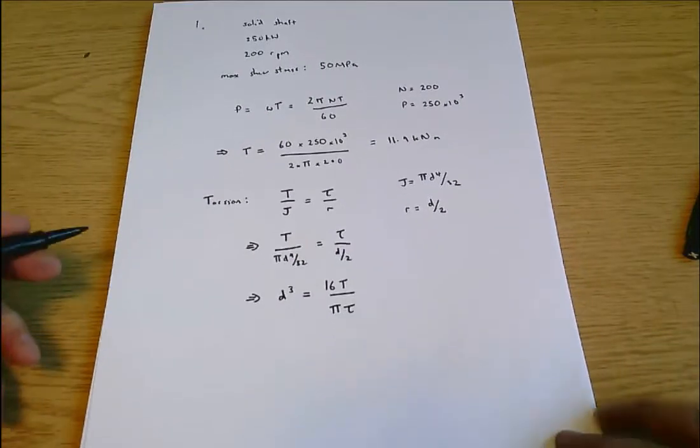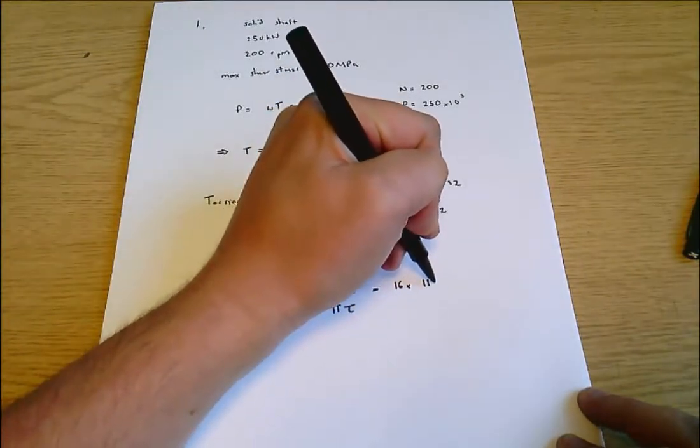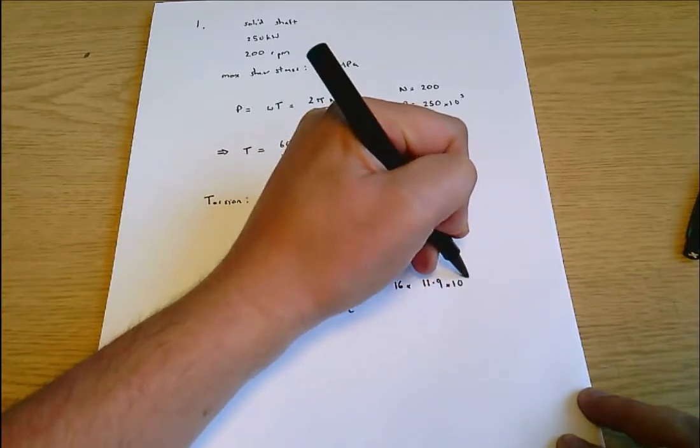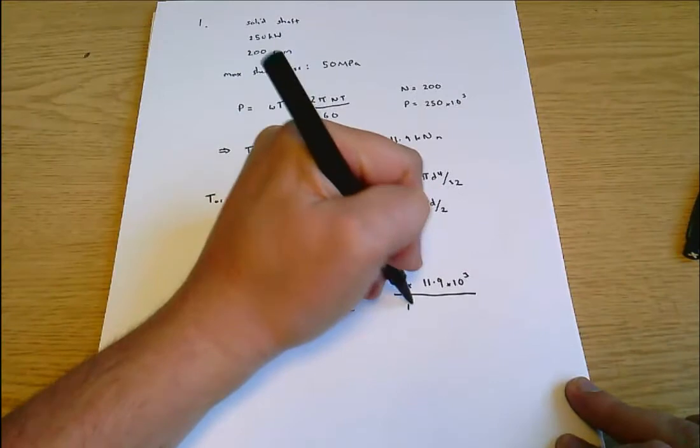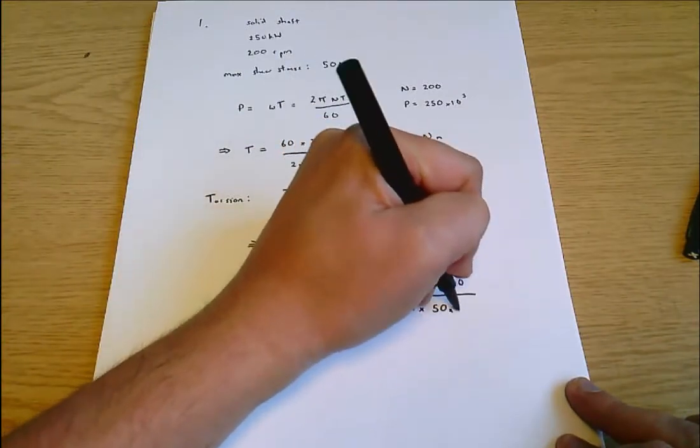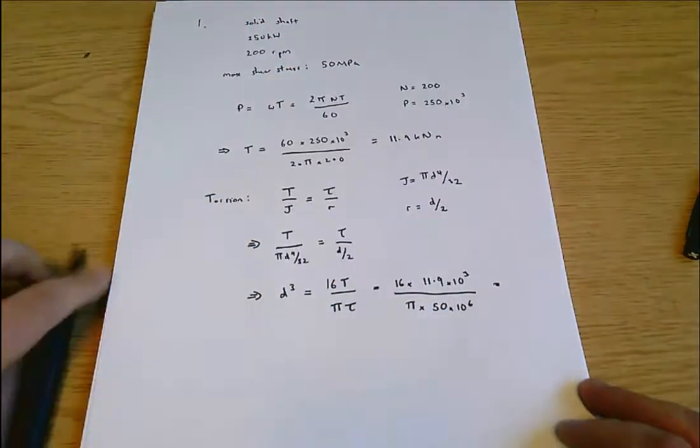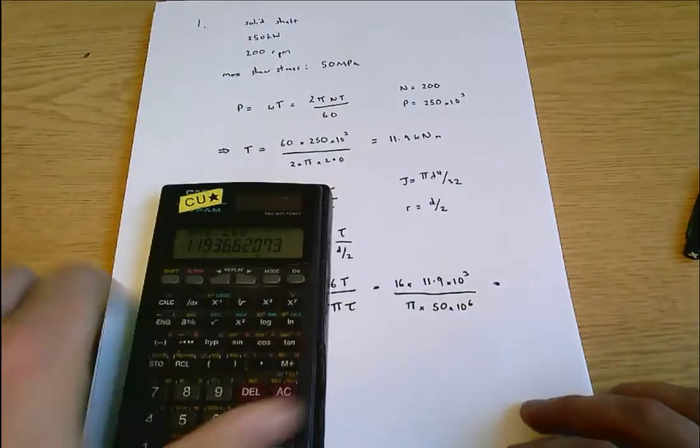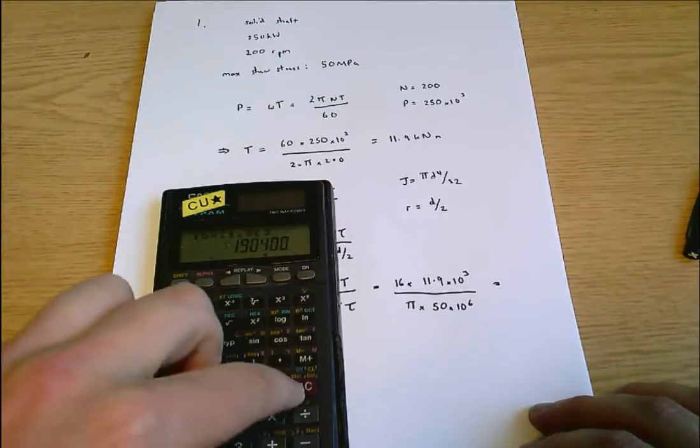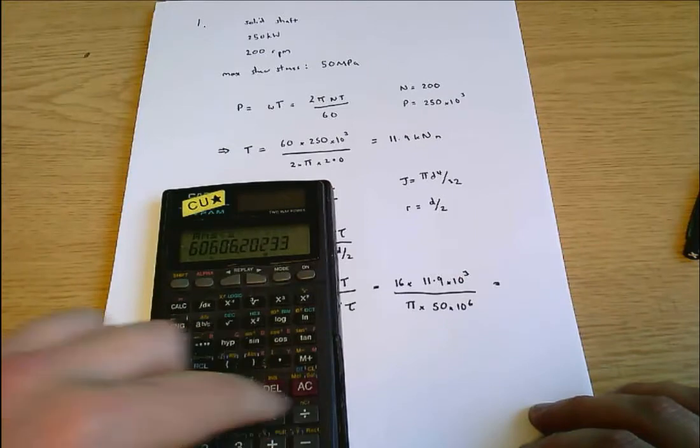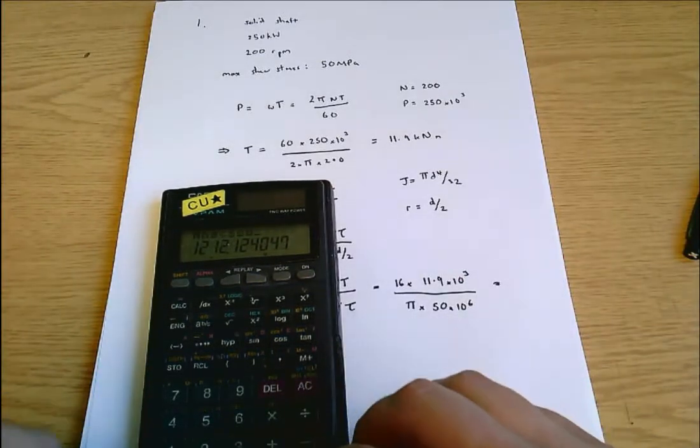And that equals 16 times 11.9 times 10 to the 3, that's the torque that we had here, divided by π times 50 times 10 to the 6, that's the maximum shear stress here. That equals 16 times 11.9 E3 divided by π divided by 50 times 10 to the 6, so I can just divide by a million there.